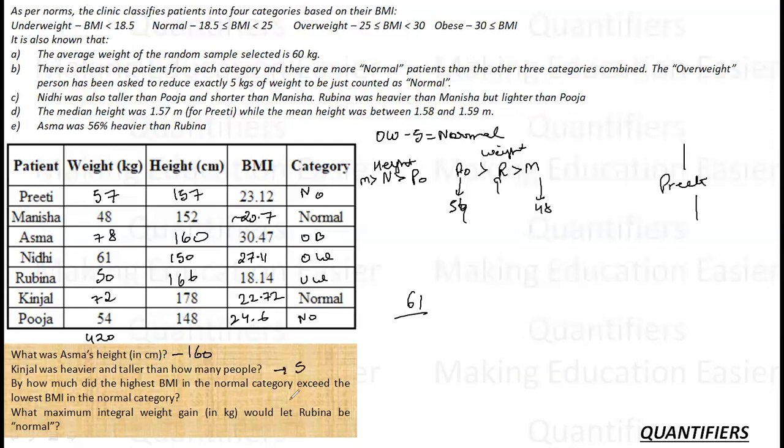How much does the highest BMI in the normal category exceed the lowest BMI? So it is 20.7 and 24.6, so the difference is 3.9.